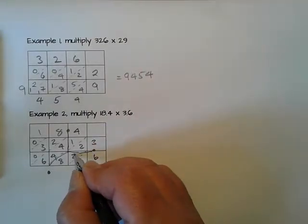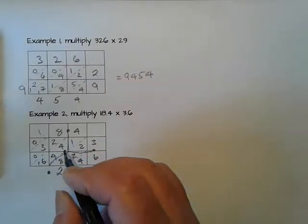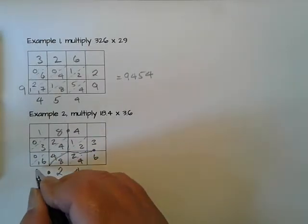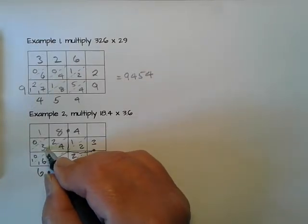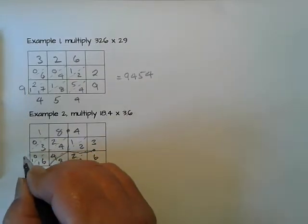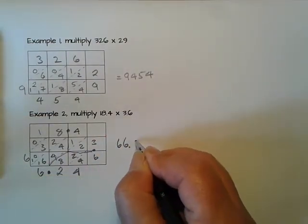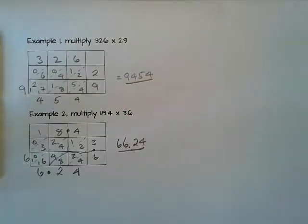4. Then 2 plus 2 plus 2 plus 8 is 12. Put 2 down, carry 1. 7 and 4 is 11, 15, 16. Put 6 down, carry 1. 1 plus 3 is 4, plus 2 is 6. I've got 0 there, so the answer is 66.24. There we go - nice, quick, easy, and it always puts the decimal point in the right place automatically.